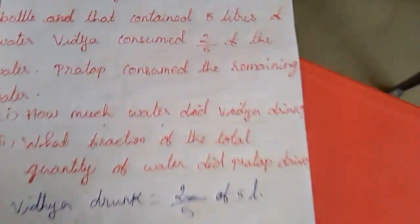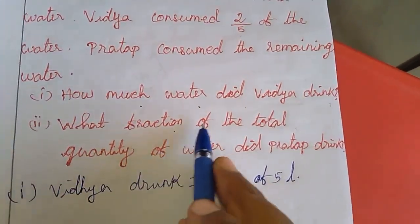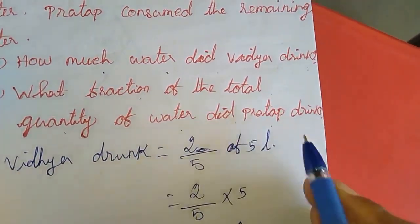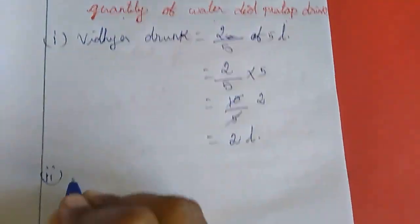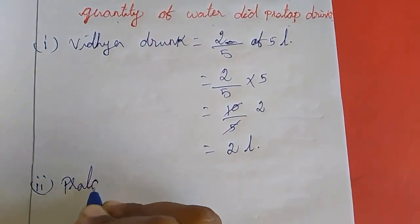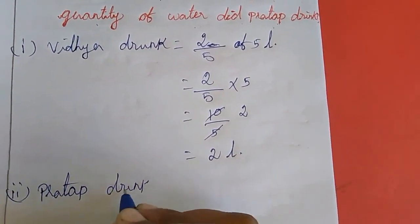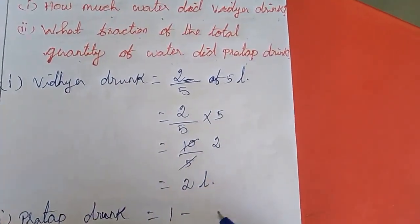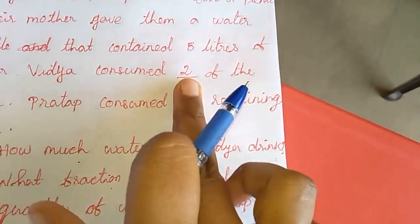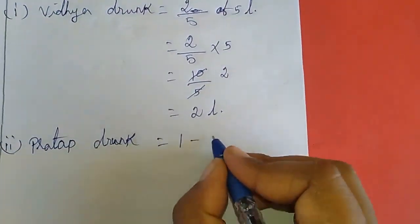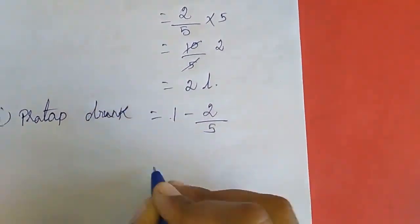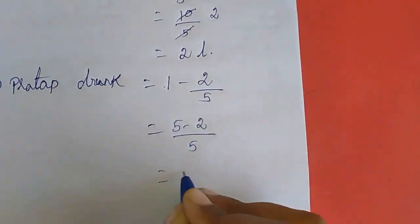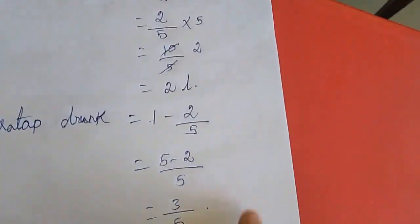Second question: what fraction did Pradhaap drink? Total fraction is 1. Vidya drank 2 by 5. So Pradhaap drank the balance: 1 minus 2 by 5, which is 5 minus 2 by 5, equals 3 by 5. So Pradhaap drank 3 by 5 fraction of the water.